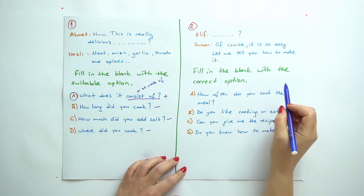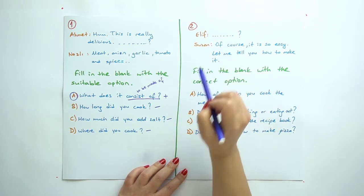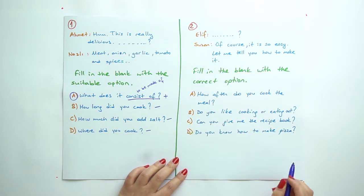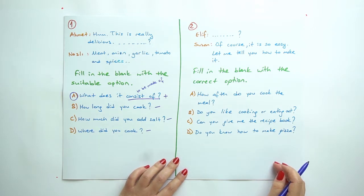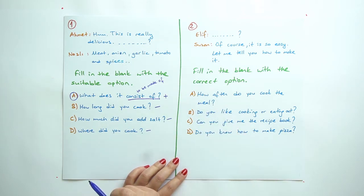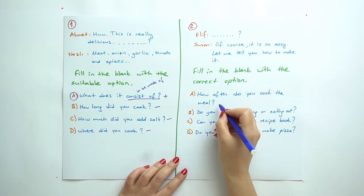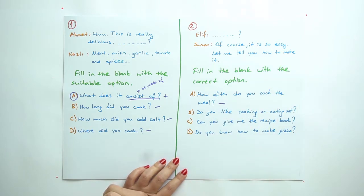How much salt did you add? We need the quantity of the salt here. We don't have. Where did you cook? We don't have any place mentioned here, so the answer is A.